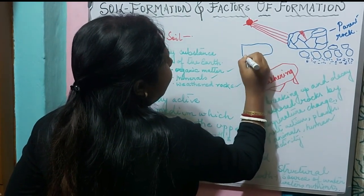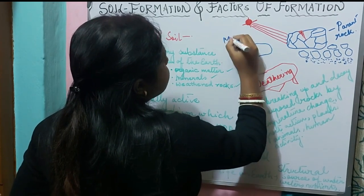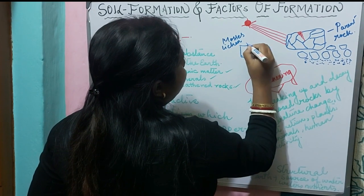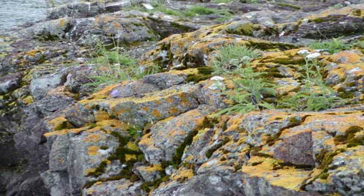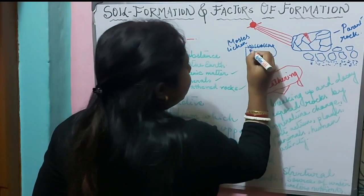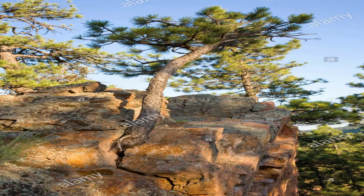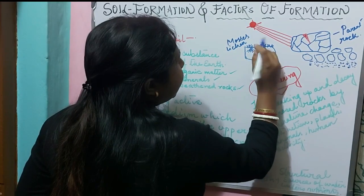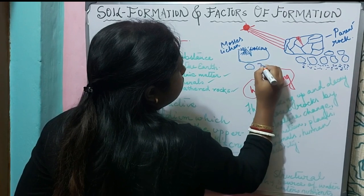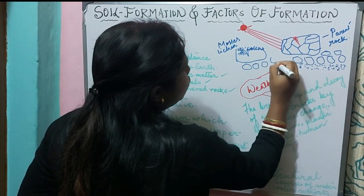Sometimes there are some plants like mosses and lichens which do not need soil to grow. They can grow on the rock surface. As they grow on the rock surface and start growing, their roots cause expansion and it leads to the breaking of the rock, and thus the rock gets broken down into smaller chunks.